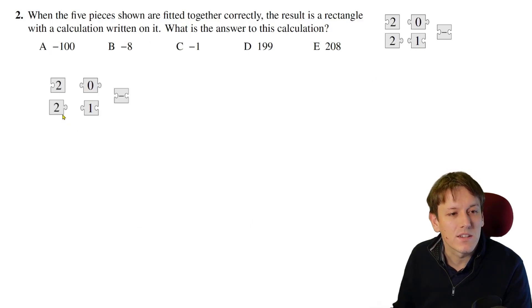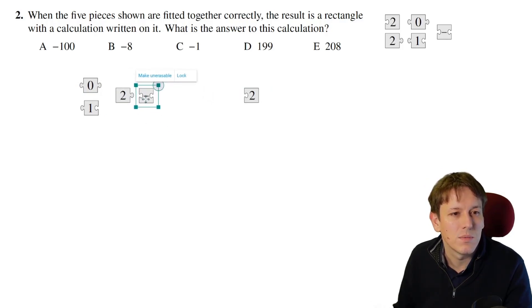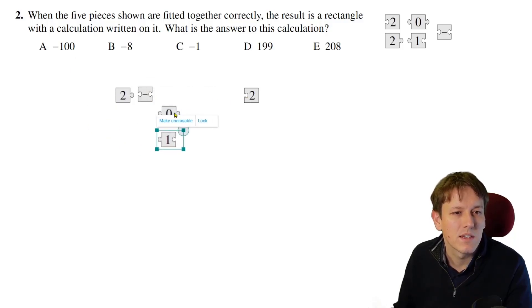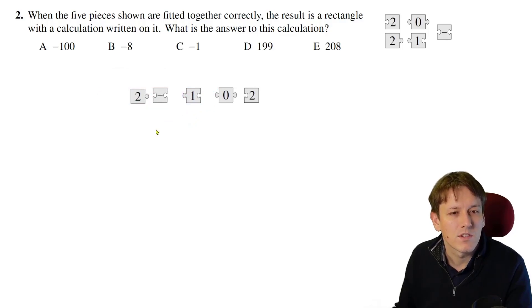There's only one way these pieces can go together. We can see they've all got flat edges top and bottom, so it's just going to be one row of digits. This one has a flat edge on the right, so it must be on the right-hand side. This one has a flat edge on the left, so that must be on the left. The only one with an in piece on this side to go with the two would be this one, then we need an out piece on this side for the two, so it must be that one over here. This is the only way they can go together, so we get 2 minus 102, which gives us minus 100, so the answer is A.